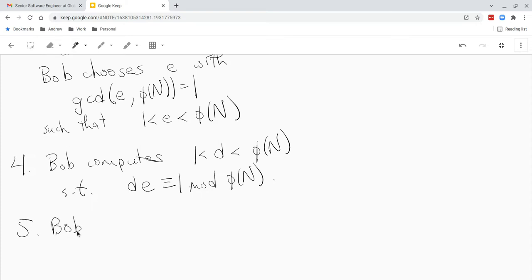Bob announces, or just publishes, like puts on his website or whatever, emails to Alice. He might as well tell everyone, doesn't matter. He tells everyone who he wants to send him messages that his public key is the integer n and the integer e.